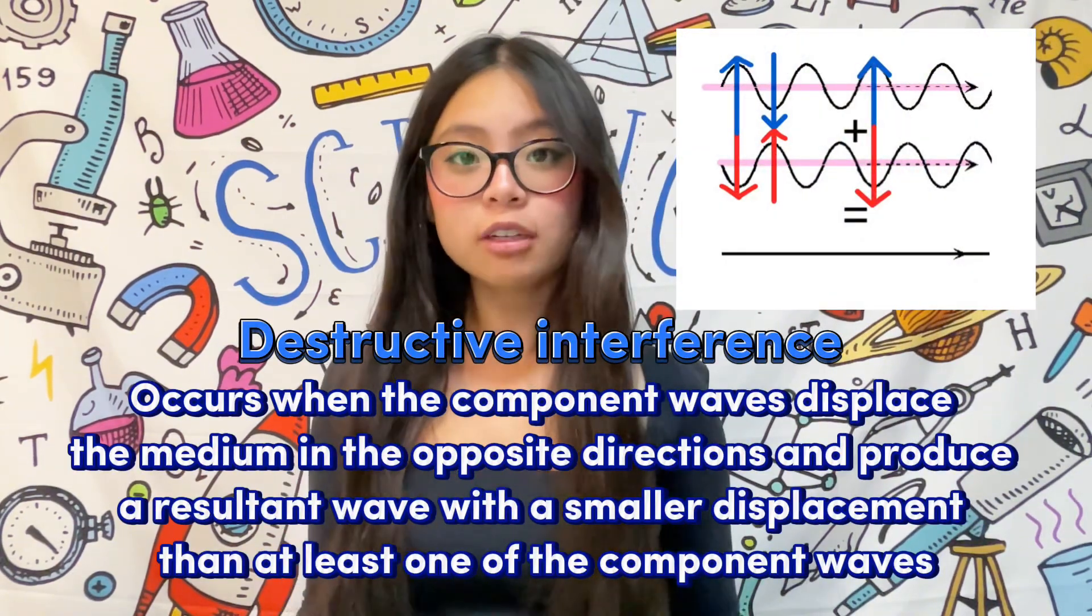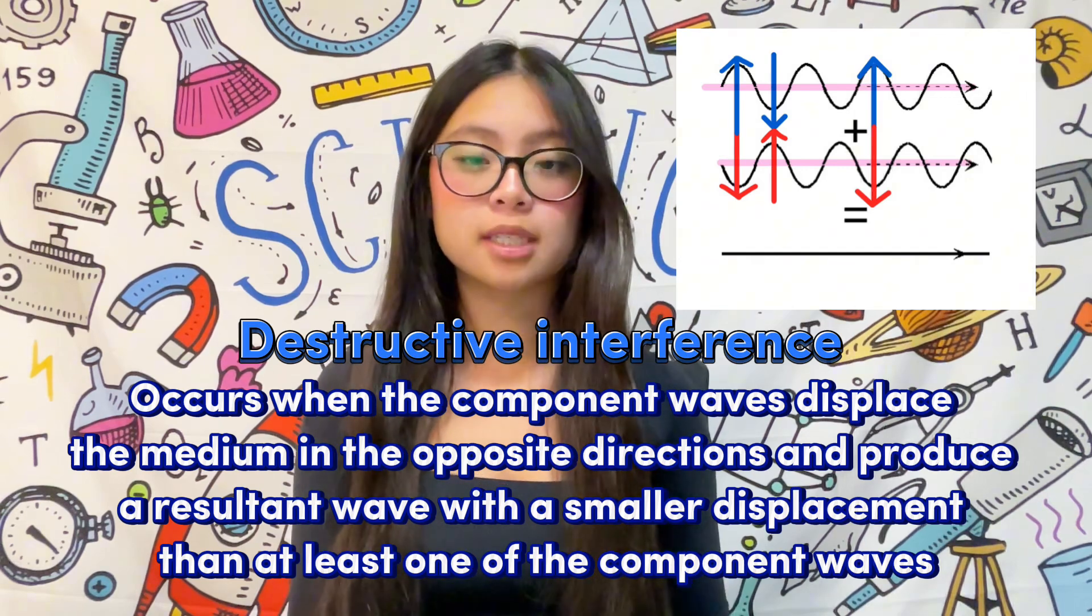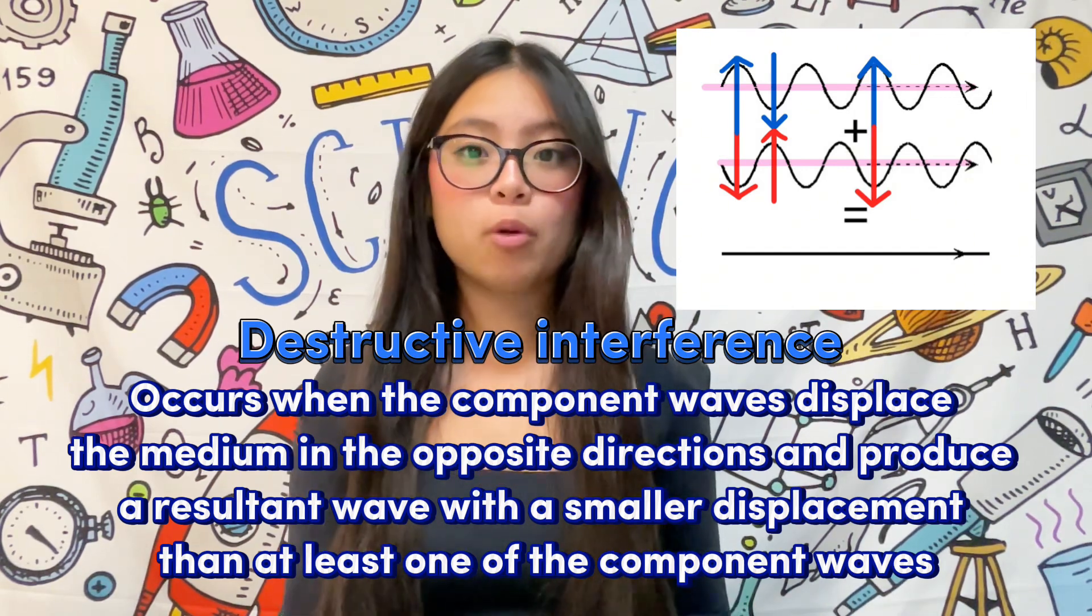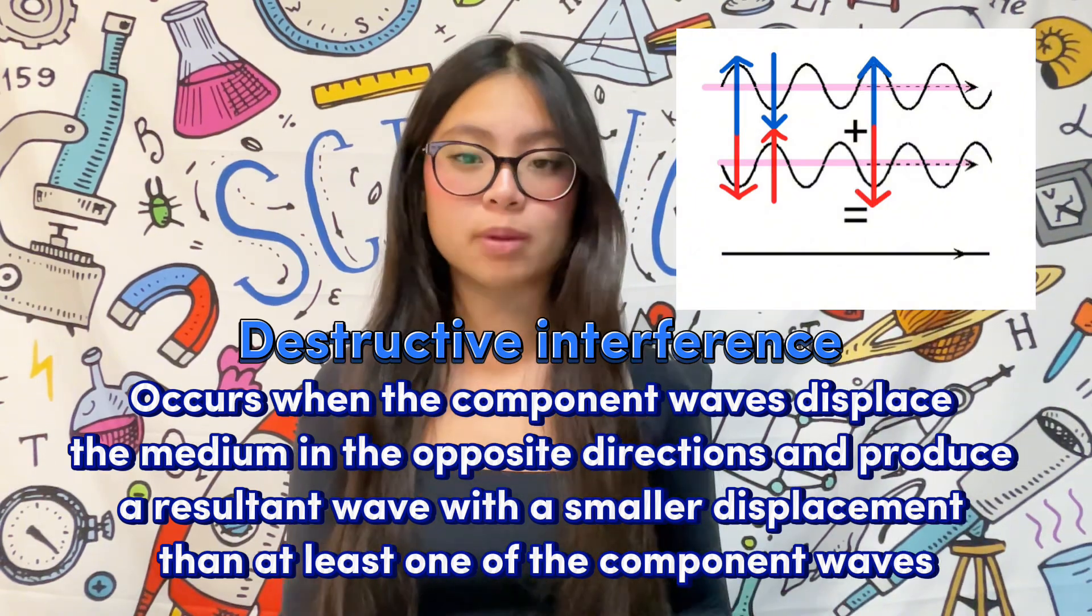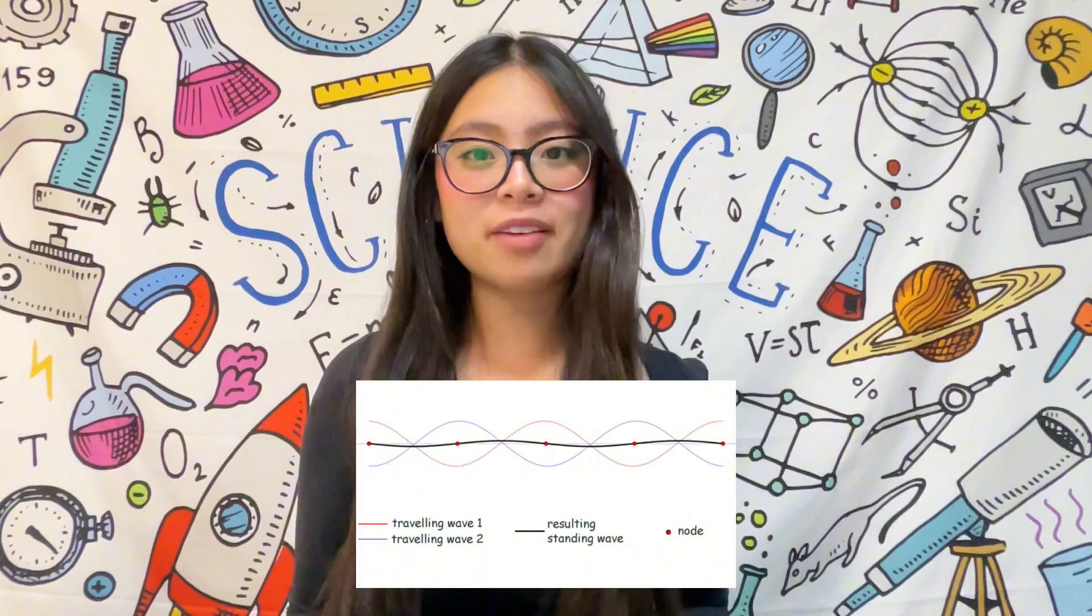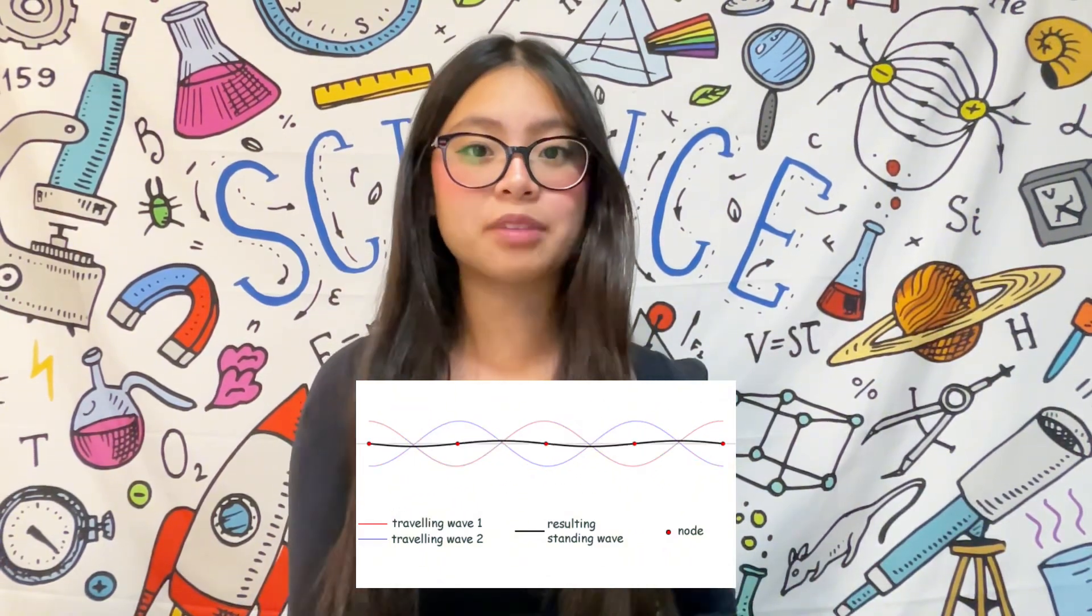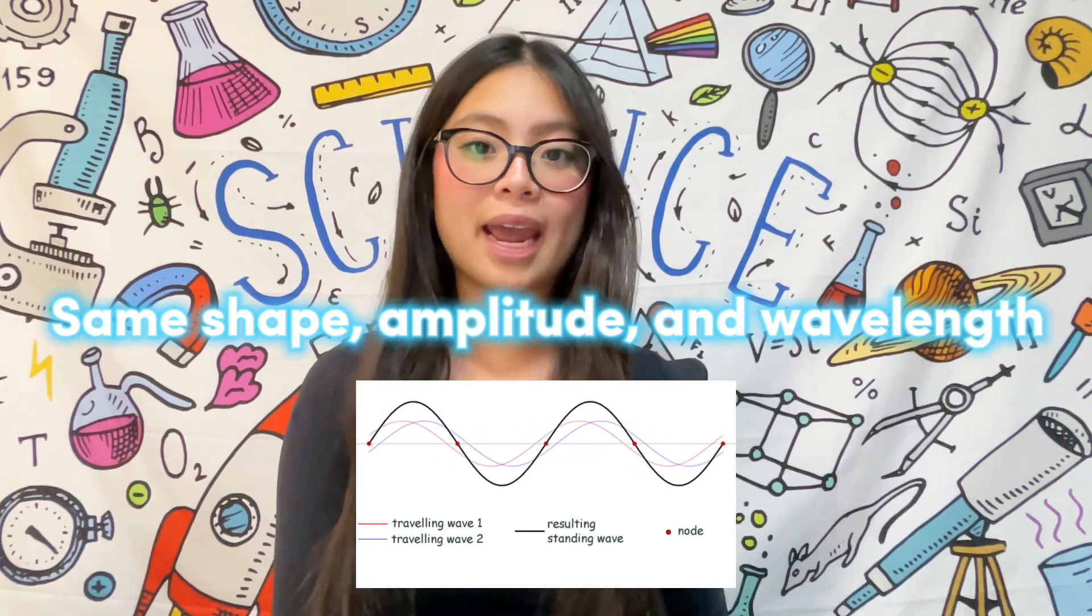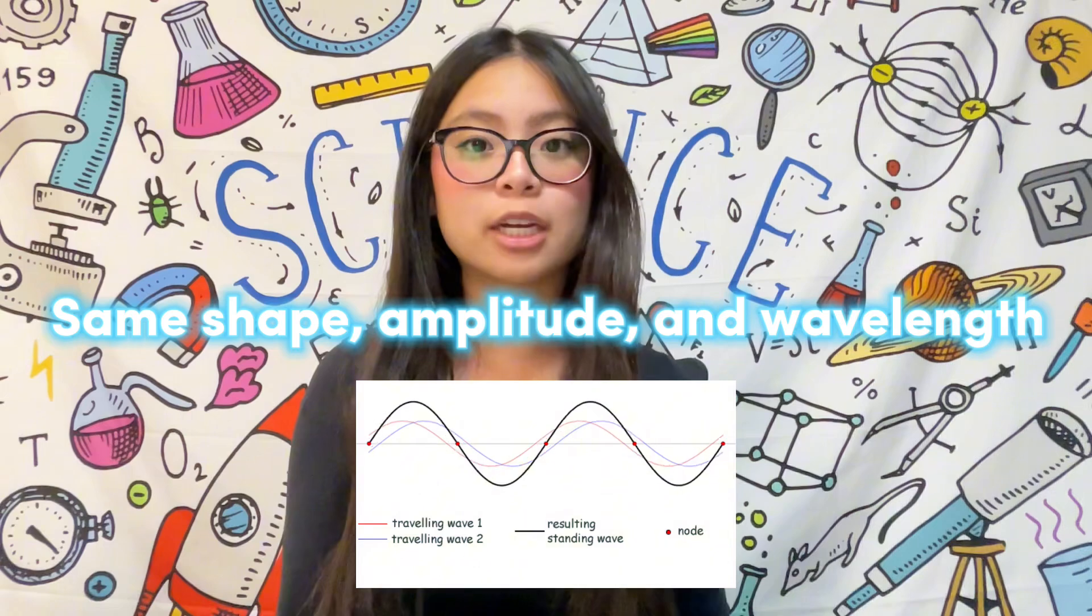We can also discuss a more unique case of interference known as a standing wave. A standing wave pattern is a special case of interference that occurs between two waves that have the same shape, amplitude, and wavelength. The component waves travel in opposite directions passing through each other.